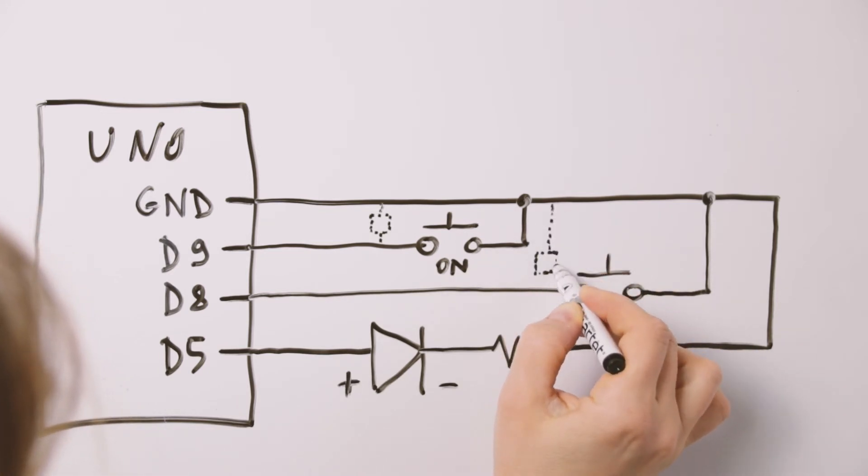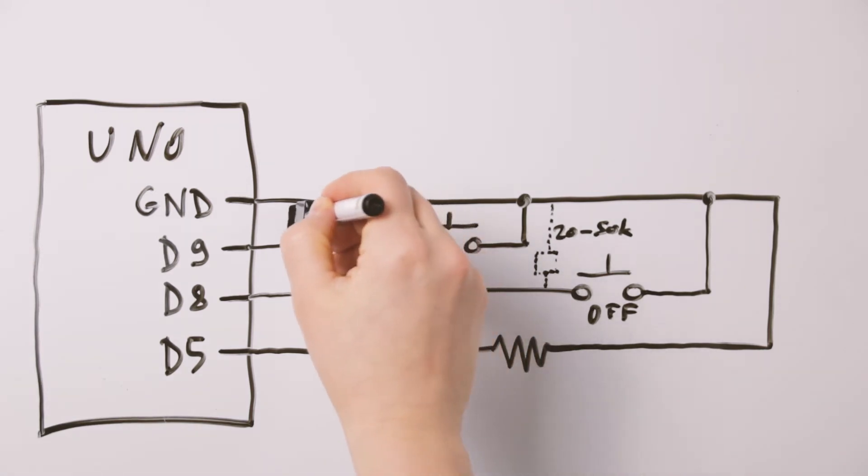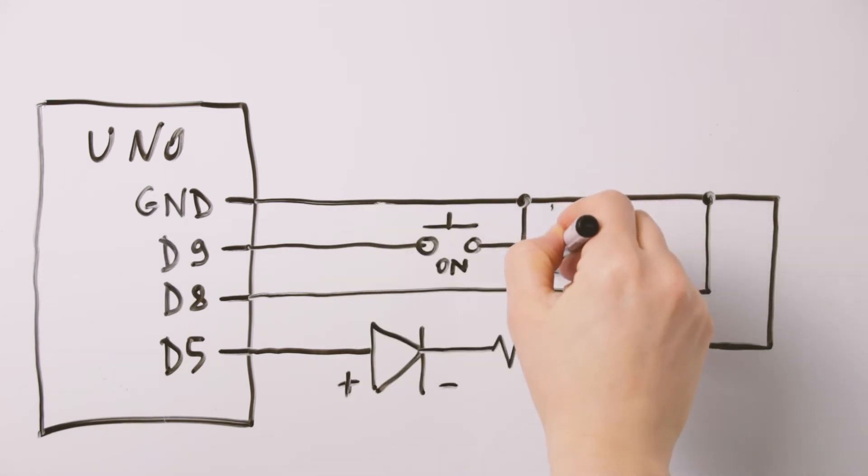Input pins have no resistor added to steer the pin to a known state if no input is present. This can result in random changes in pin state because of picking up electrical noise from the environment. This faulty behavior is called a floating pin.